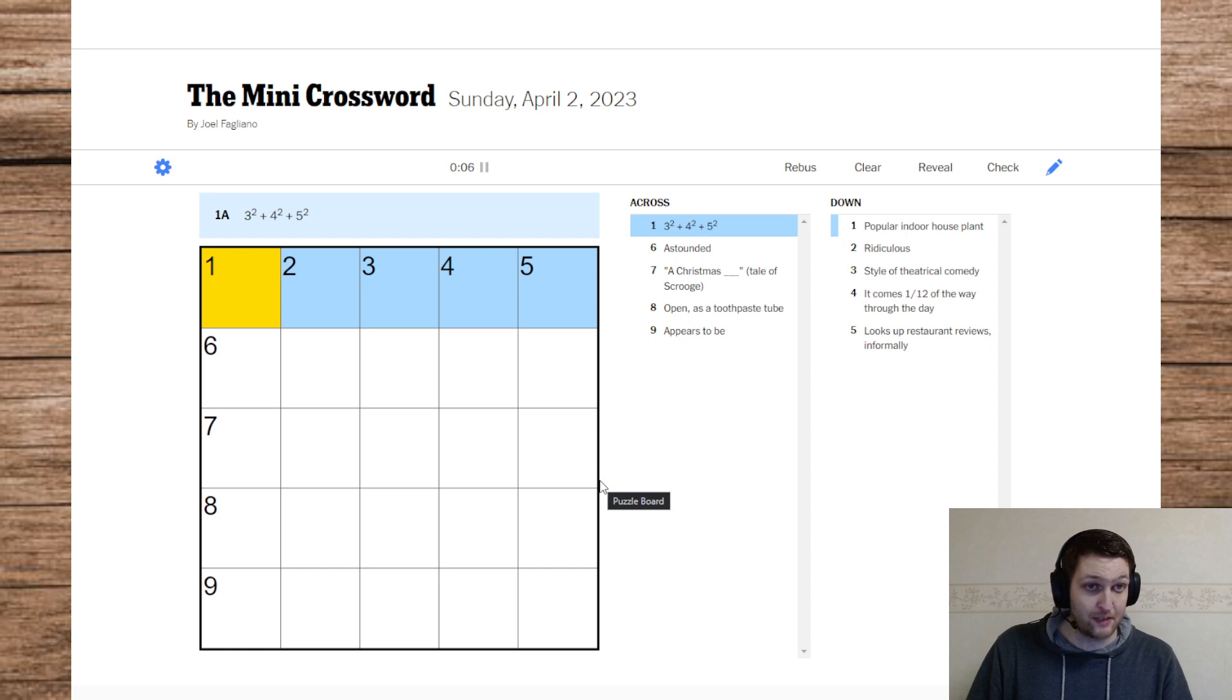3 squared plus 4 squared plus 5 squared is 9 plus 16 plus 25 is 9, 16, 25. Wait, is this even a thing? Oh, that's 41, 41, 50. So that's 50.